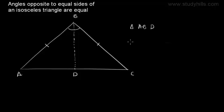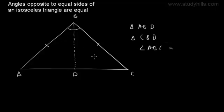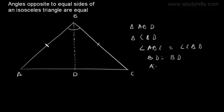We have two triangles — triangle ABD and triangle CBD. We know side AB is equal to side BC, and angle ABD is equal to angle CBD (since BD bisects angle B). Also, side BD is common to both triangles, so BD is equal to BD. By the SAS rule, we can say triangle ABD is congruent to triangle CBD.